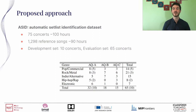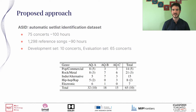To develop and evaluate our system, we collected and annotated a new dataset we call ASSID — Automatic Setlist Identification Dataset. It includes 75 concerts lasting about 100 hours and 1,300 reference songs lasting about 90 hours. We further split this dataset into two parts: the development subset includes 10 concerts and their respective reference songs, and the evaluation subset includes 65 concerts and their respective reference songs.